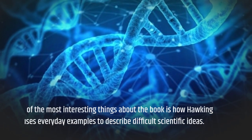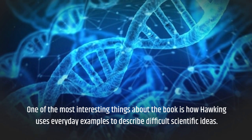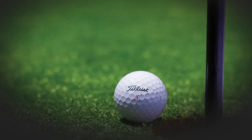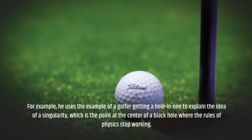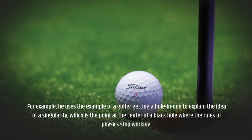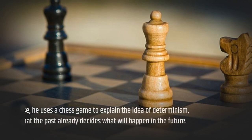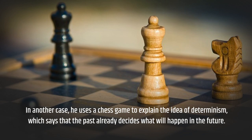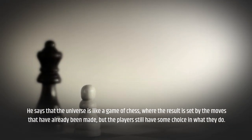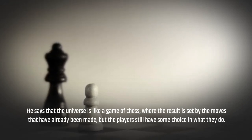One of the most interesting things about the book is how Hawking uses everyday examples to describe difficult scientific ideas. For example, he uses the example of a golfer getting a hole-in-one to explain the idea of a singularity, which is the point at the center of a black hole where the rules of physics stop working. In another case, he uses a chess game to explain the idea of determinism, which says that the past already decides what will happen in the future. He says that the universe is like a game of chess, where the result is set by the moves that have already been made, but the players still have some choice in what they do.